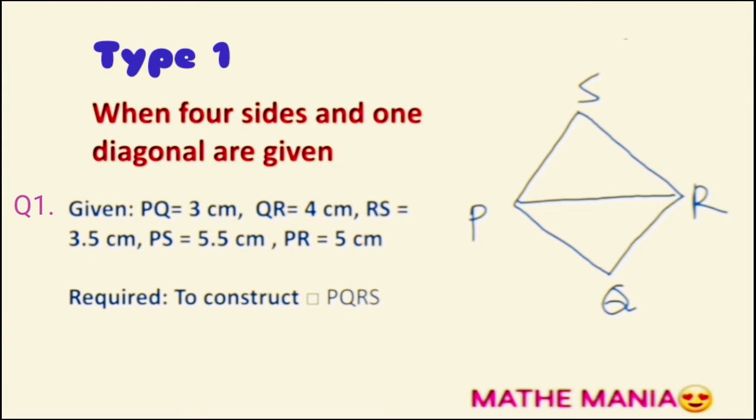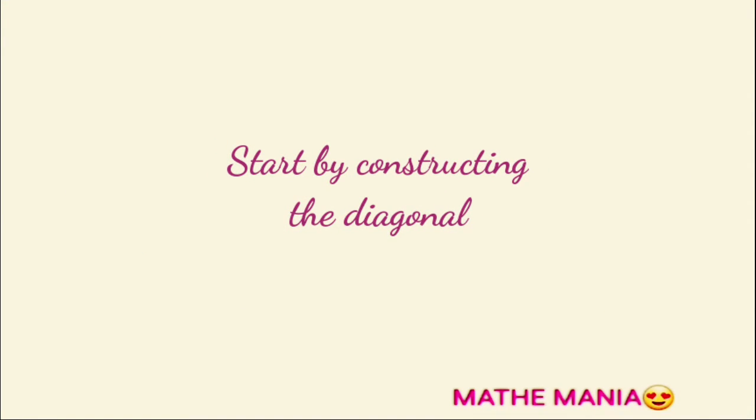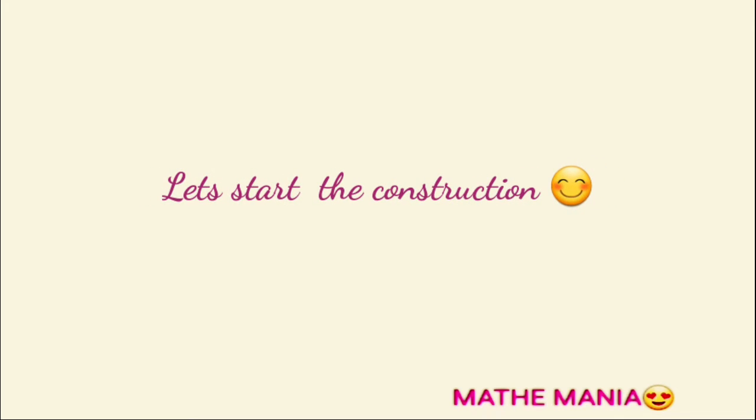Now, let us start the construction. As per the rough figure, we have to first construct the diagonal and then we will draw the two triangles, one above and one below this diagonal. When you are drawing the diagonal, take care that enough space is left above and below the diagonal.